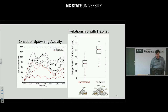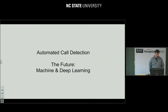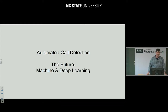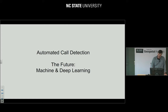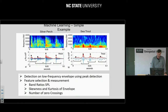We could keep developing one detector per species at a time, but eventually we probably need to do something different. The future of all this is probably some form of machine or deep learning — really statistical learning.